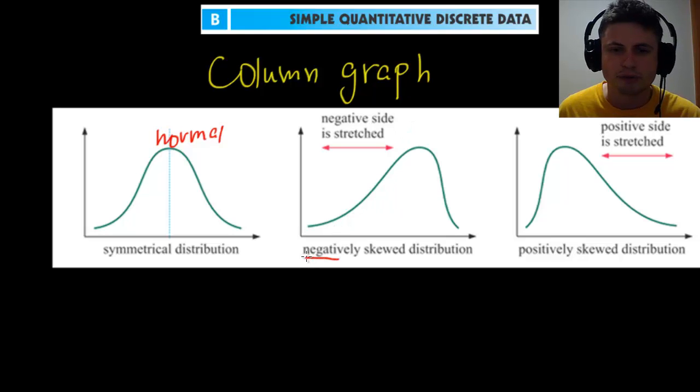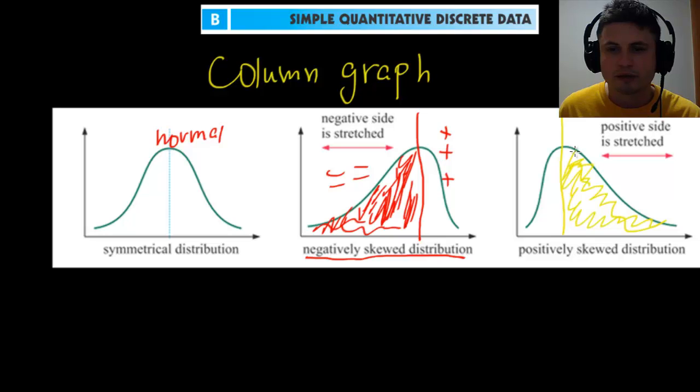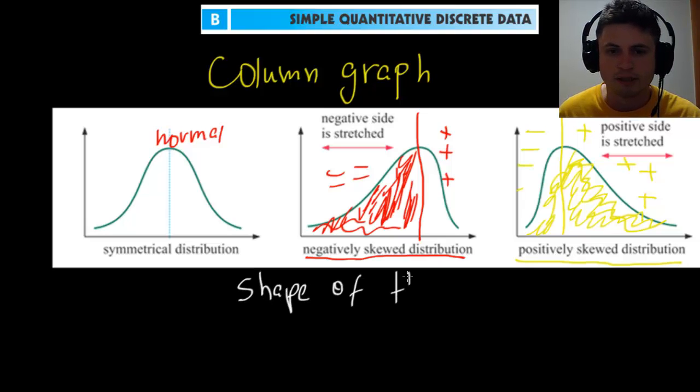However, normally we see different types of distributions. This is the normal distribution, also known as symmetrical distribution. But then sometimes you'll also have something called negatively skewed distribution. Negatively skewed distribution means that you don't really have that many people on the positive side. It means that not many people are genius, not many people are smart, a lot of people are on the dumber side. And on the other side we have positively skewed distribution. That's when you have a lot more people with really high IQ, not so many people with a low IQ. These names represent the shape of the statistic that you get once you collect your data.